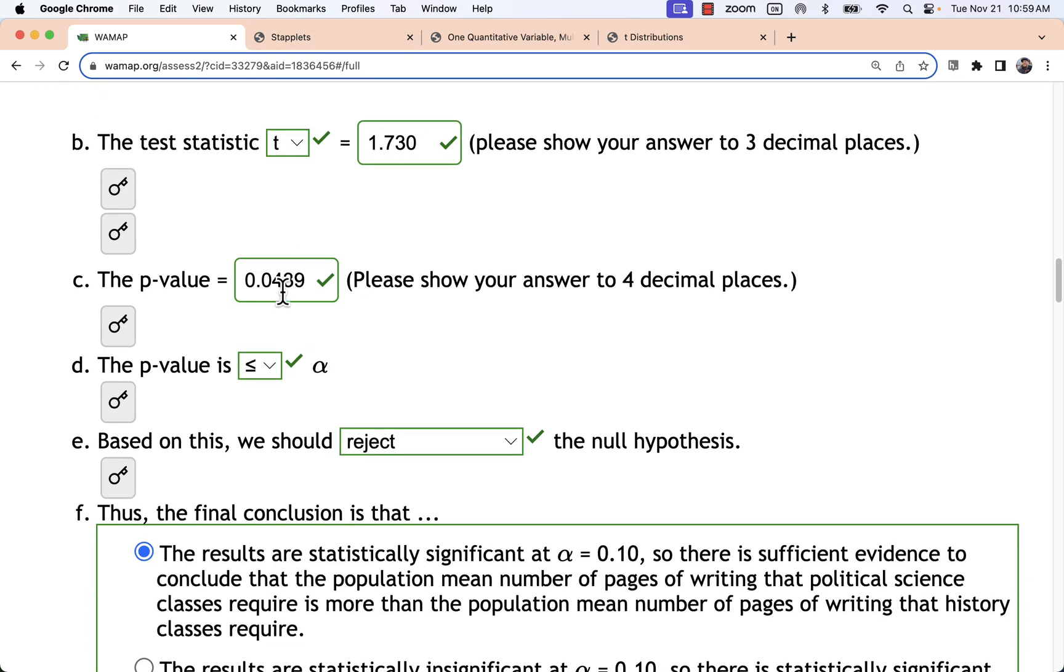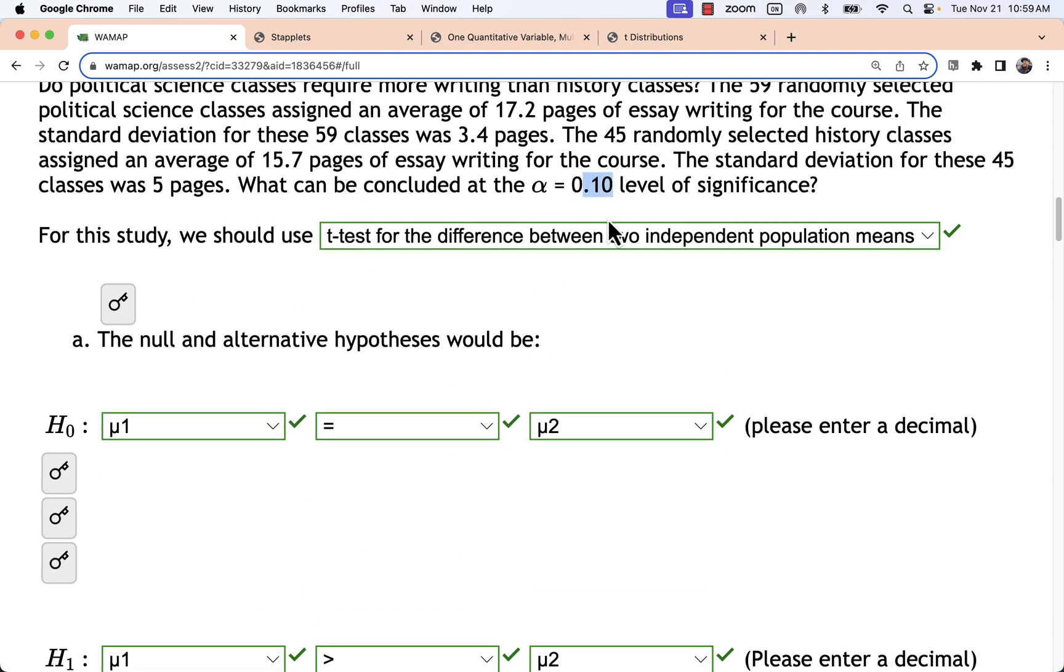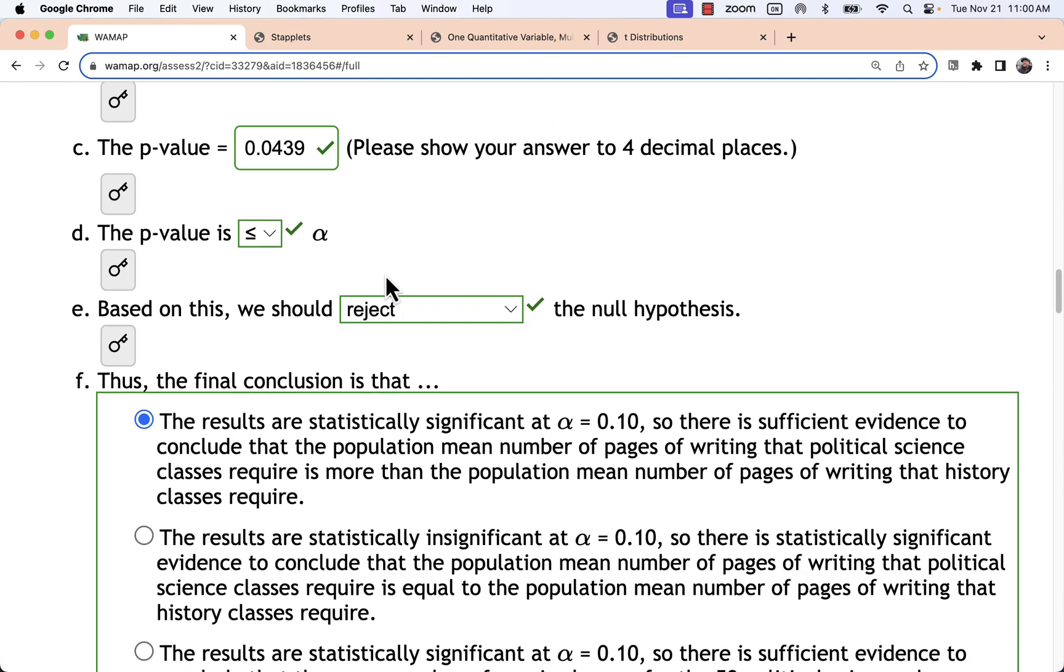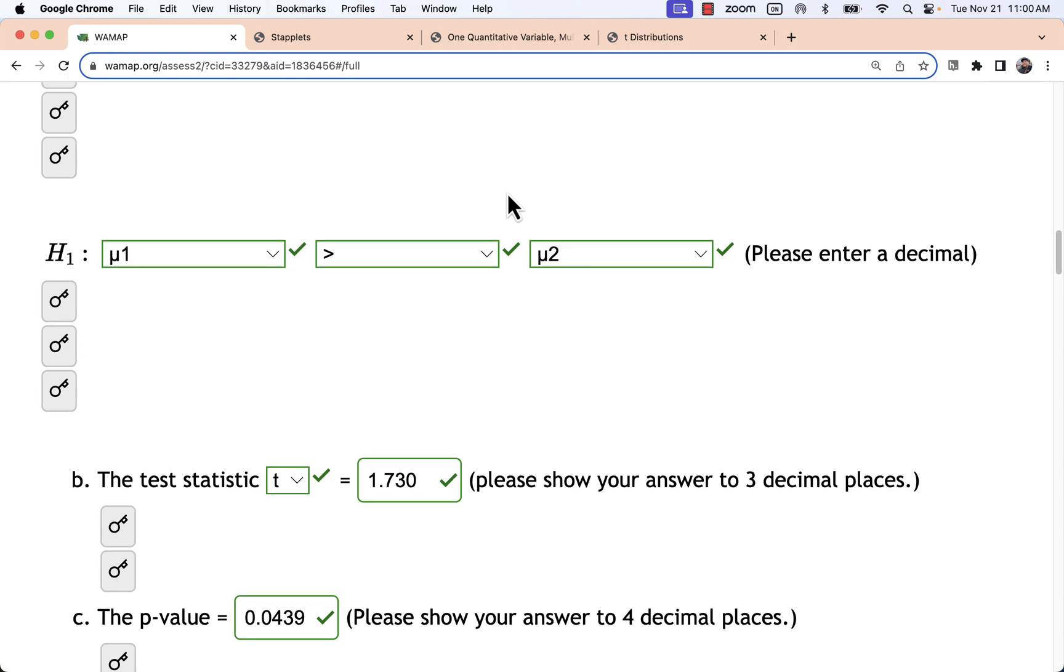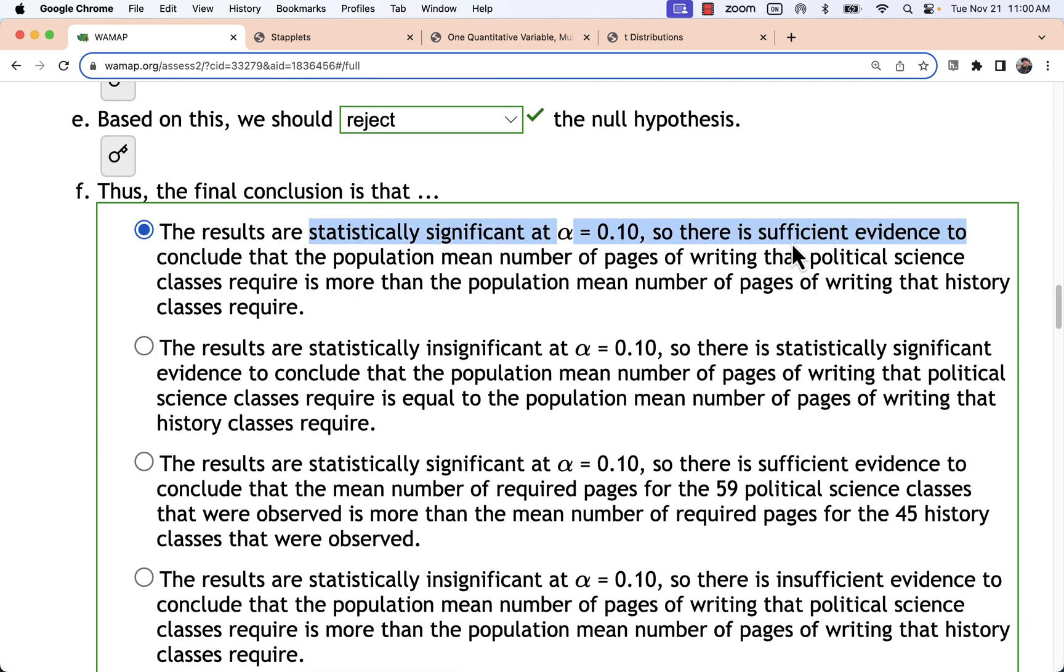Going to complete the problem. I've got a p-value that is less than alpha because my alpha was .1 here. So this is a significant result. We're far enough away from the assumed equality here. We're beyond what we would say is a margin of error. And we have a statistically significant result with sufficient evidence to conclude that the population mean of political science is more than the population mean of history.